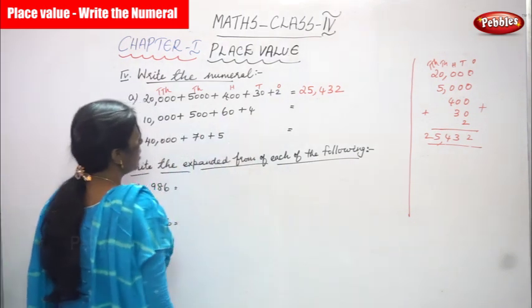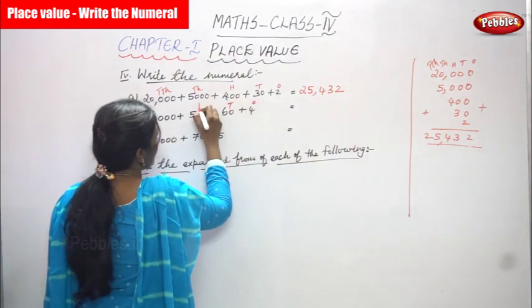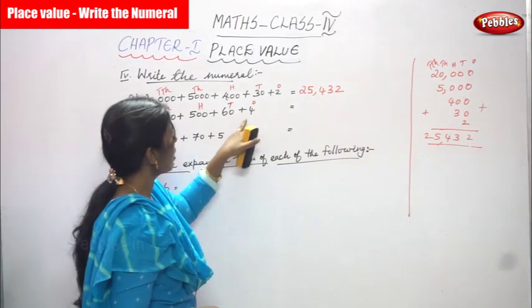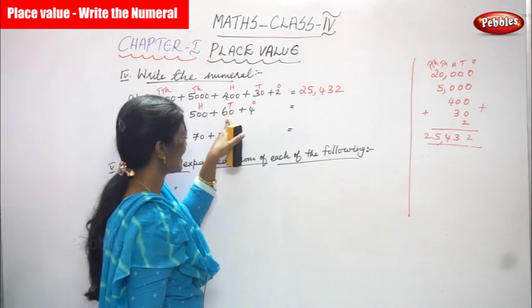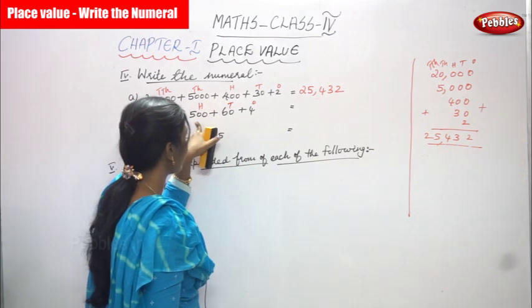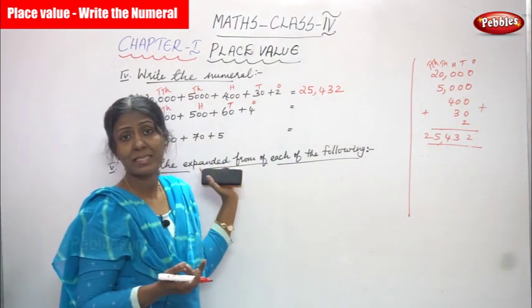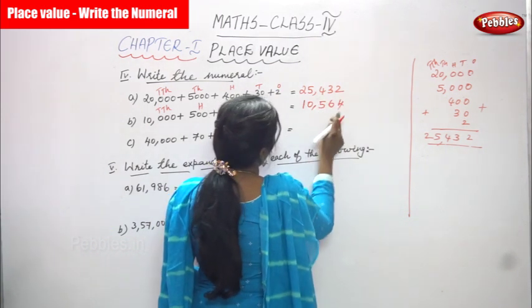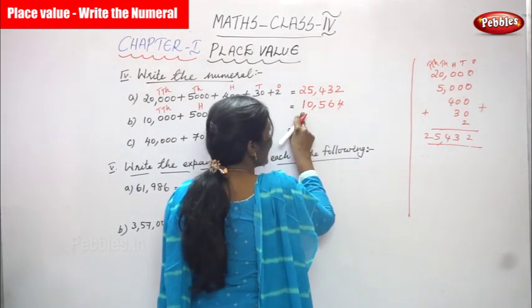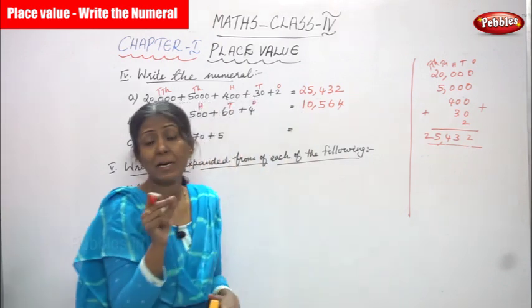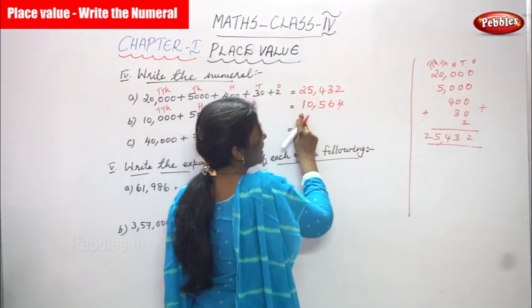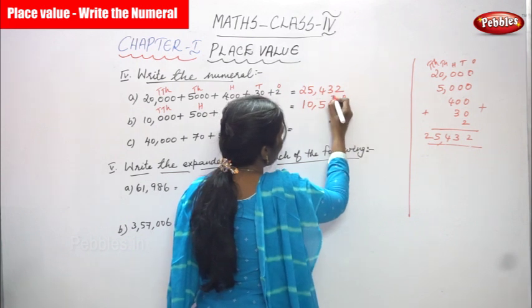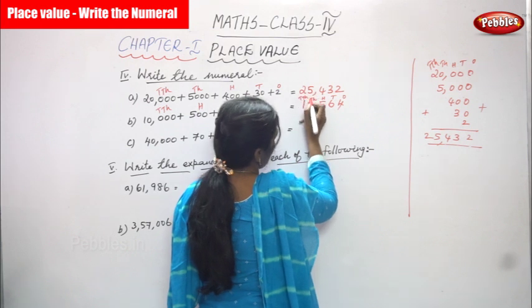Next: 10,000 plus 500 plus 60 plus 4. So four ones, six tens that is sixty, five hundreds, and ten thousands. See - four ones, how many tens? Six tens, that is sixty. And five hundreds - five in the hundreds place. There is no thousands directly; it goes straight to ten thousands. So you have to write ten thousand five hundred and sixty-four. In the thousands place there is no number, so you write zero.